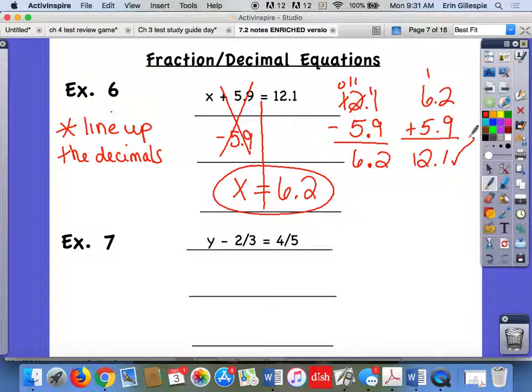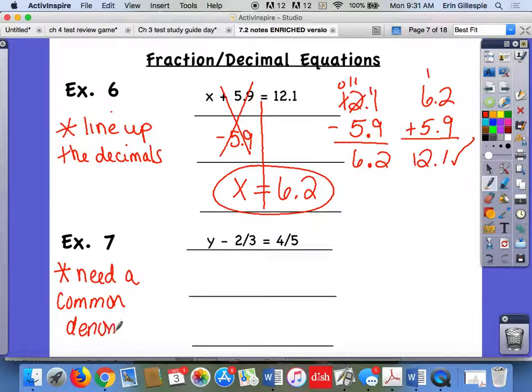Over here, fractions. The key here when you're adding subtracting fractions is you have to have the denominator. Same thing on the bottom, right? So I'm going to go ahead and at least first figure out what I need to do. Draw my line, find my variable. I'm subtracting two-thirds, so I need to add two-thirds to both sides. And I'm going to write it more like this because it's kind of hard for me to think about that way. So over here, I would probably just rewrite this off to the side.